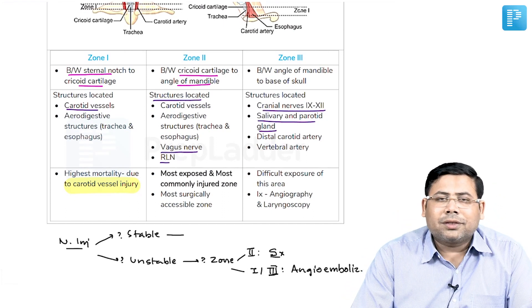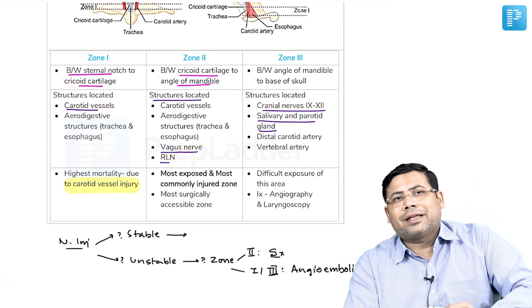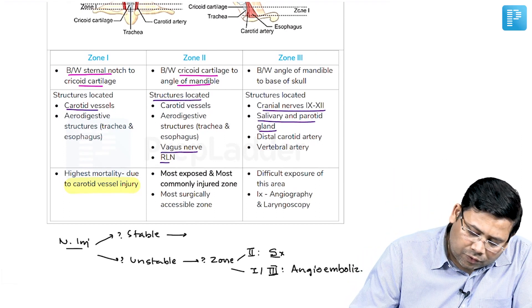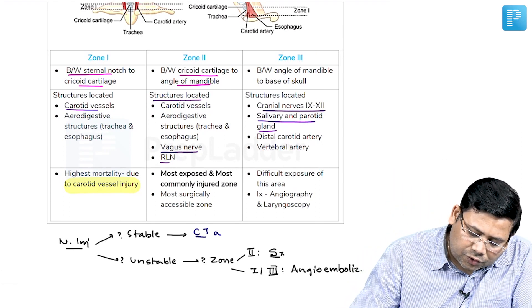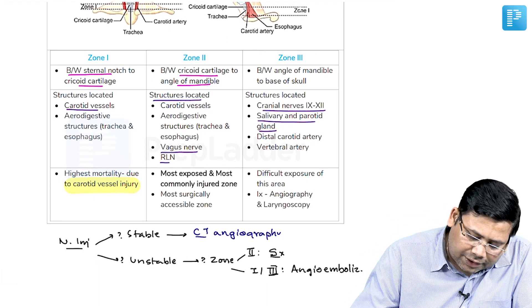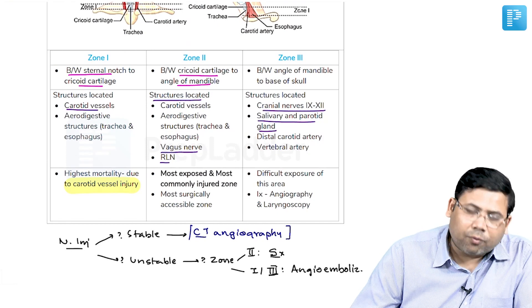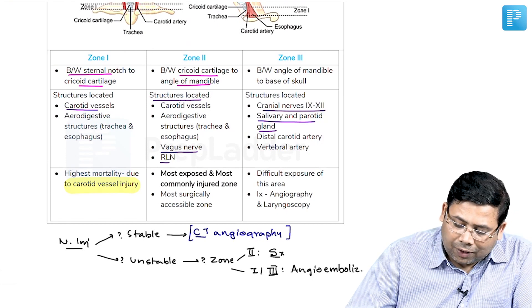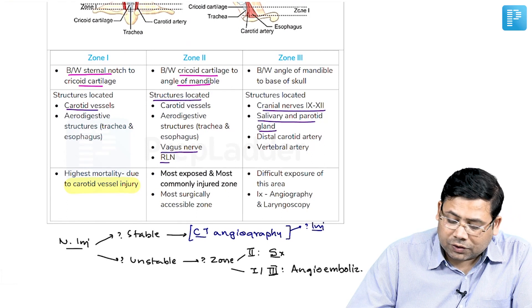When you talk about the stable status, what to do in this case? In case of a stable patient, you will go for CT angiography. And when you are talking about CT angiography, what are the important things about CT? So either there will be injury or there will be no injury.